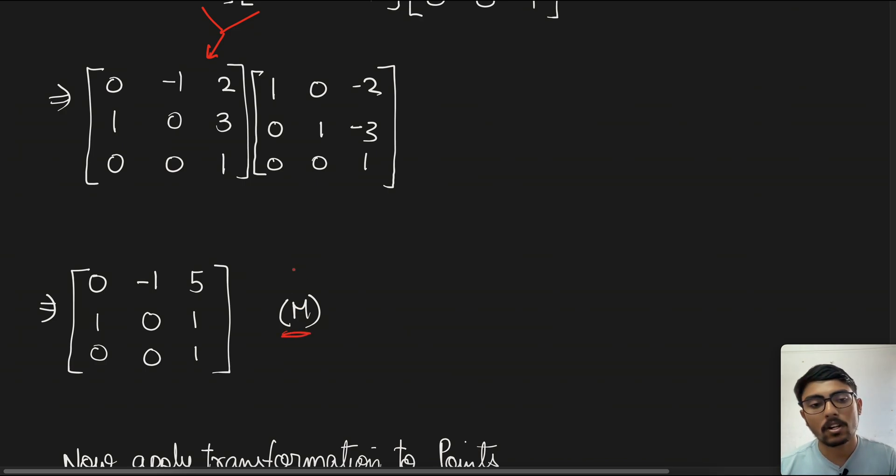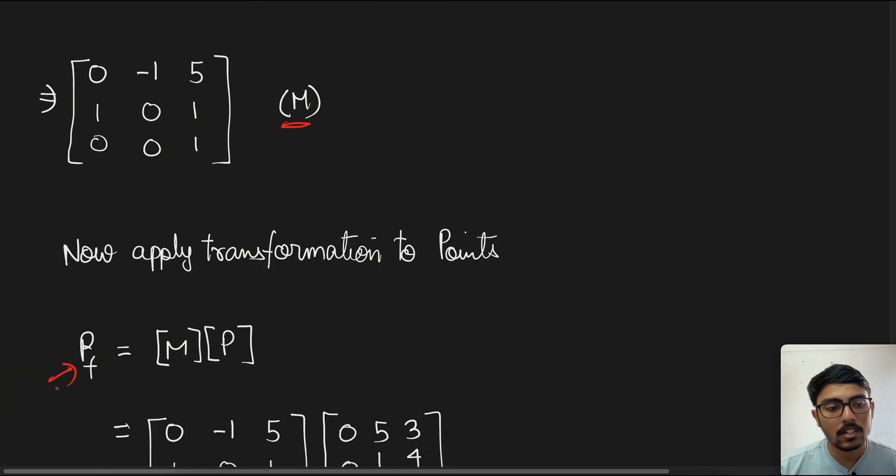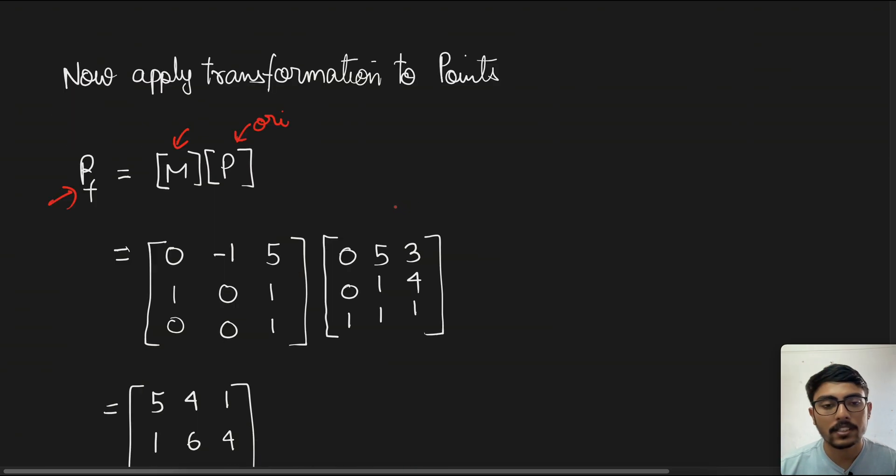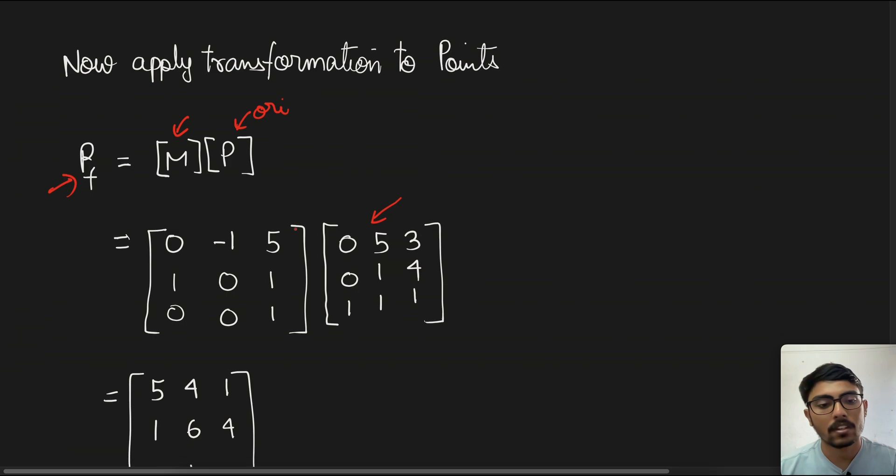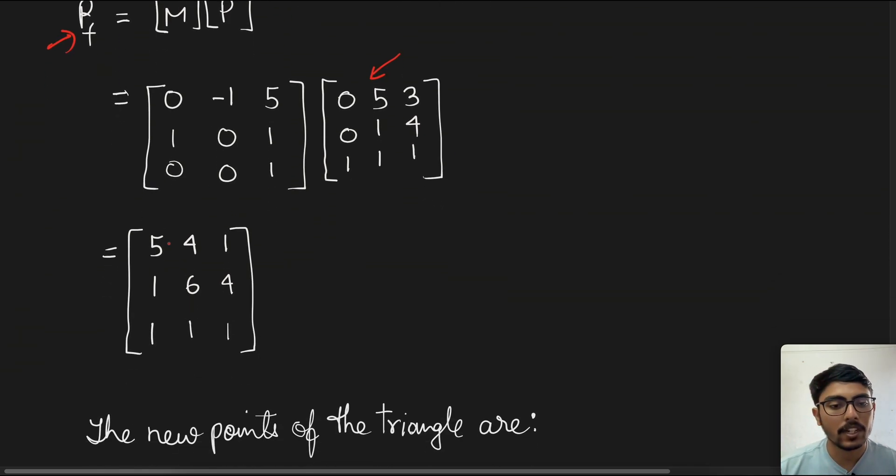Now this particular matrix is all we need for transforming the existing points into their new locations. This is the final points that we want to find out. This is the transformation matrix consolidated, and this is the original points. This is the matrix that we have seen previously, and this is the transformation matrix.